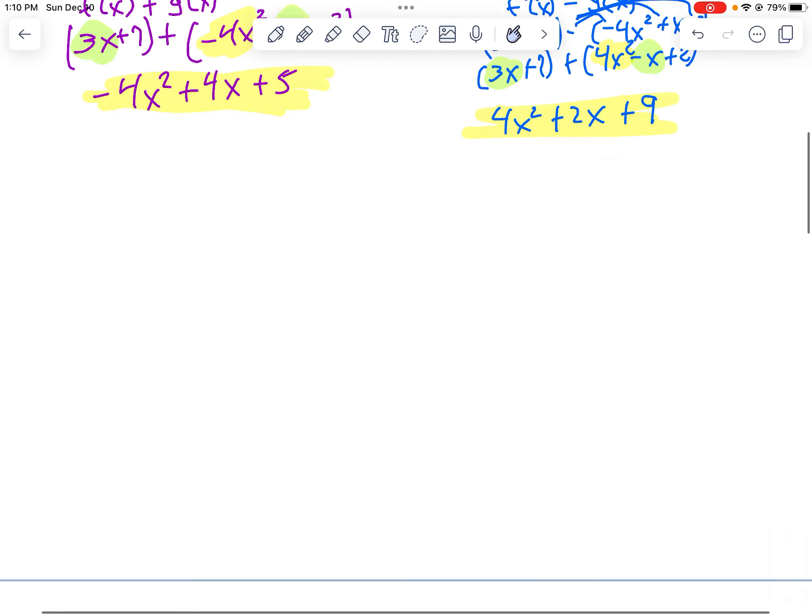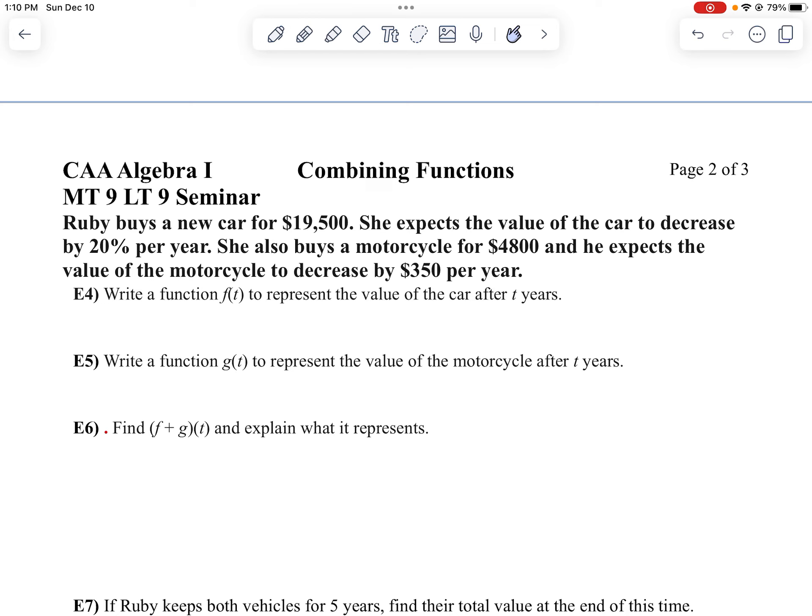Okay, let's take a look at kind of a word problem here. Ruby wants to buy a new car for $19,500. She expects the car to decrease by about 20% each year. Well, that means a decrease of 20% is the same as retaining 80% of the value. In other words, my r is 80%. So I want to write a function to represent this f of t after t years. So I'm going to say f of t equals 19,500 times 0.8